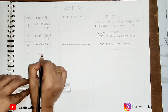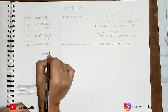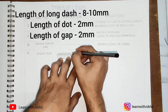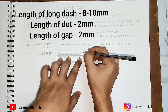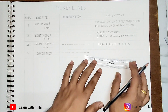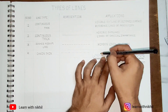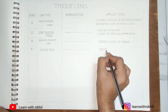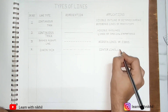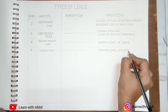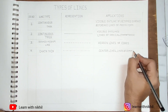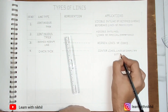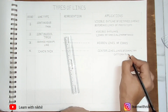The next one is the chain thin line. The distance really matters here. The long dash should be 8 to 10 millimeters, the dot should be around 2 millimeters, and the gap should be 2 millimeters. These are used as center lines, specifically between circles and semicircles, and also for lines of symmetry. Every line should be accurate and consistent.